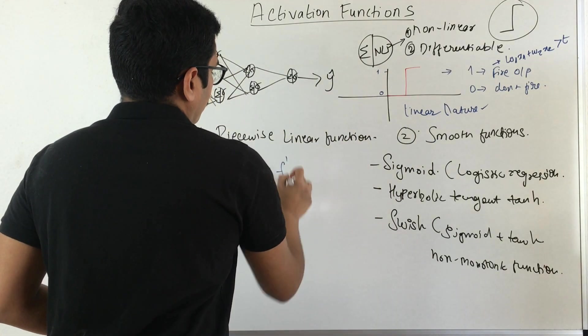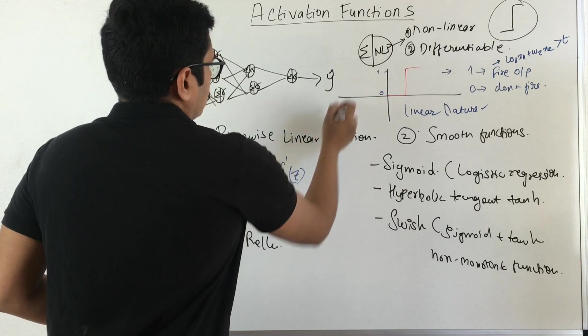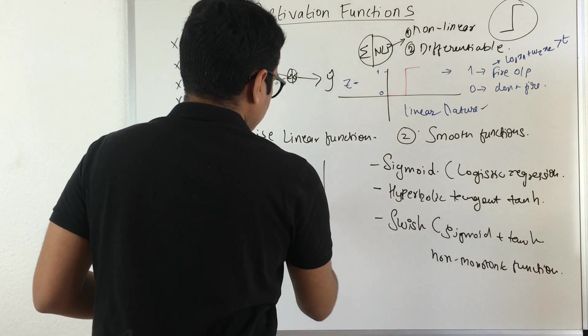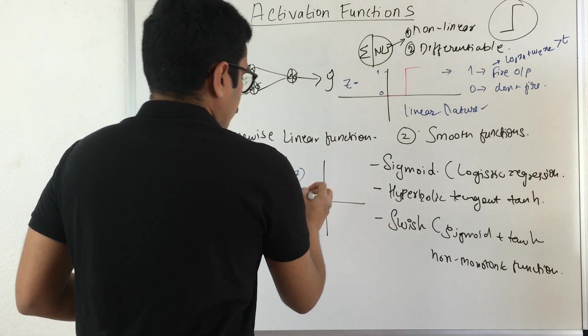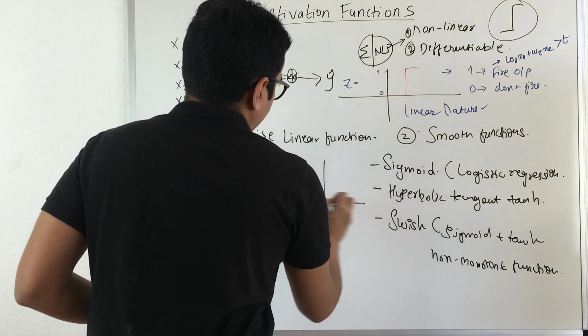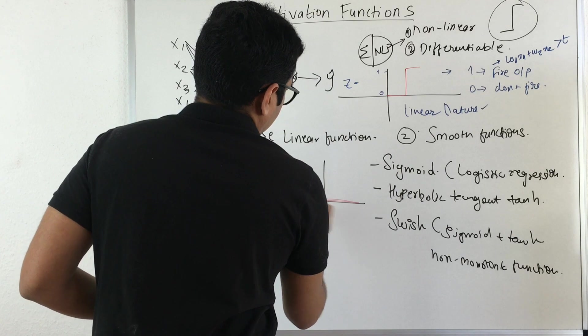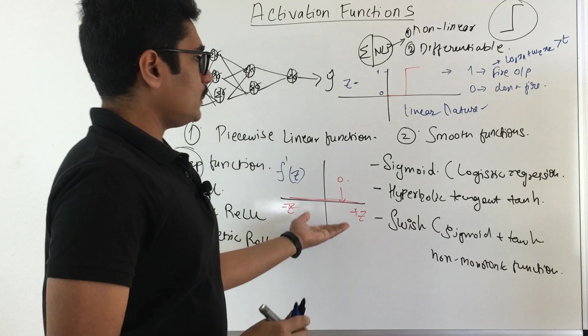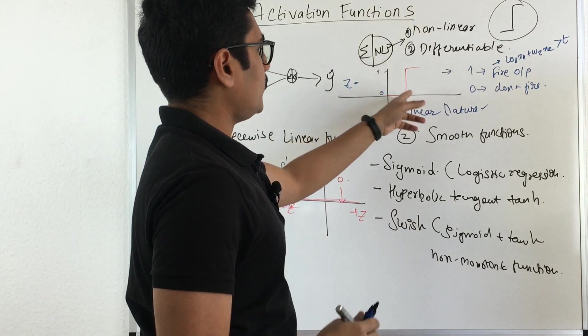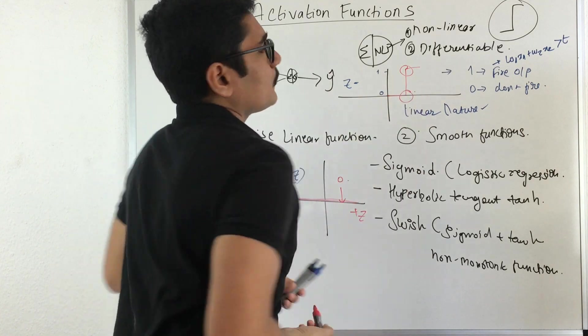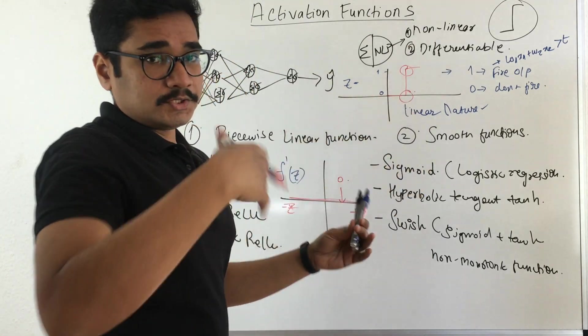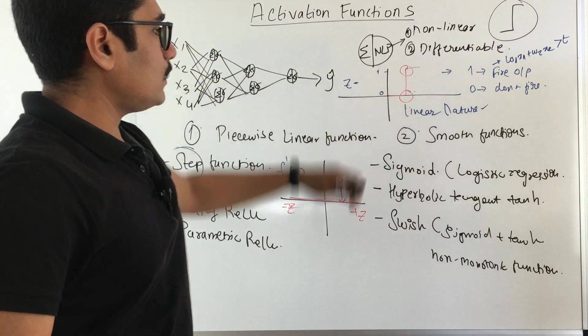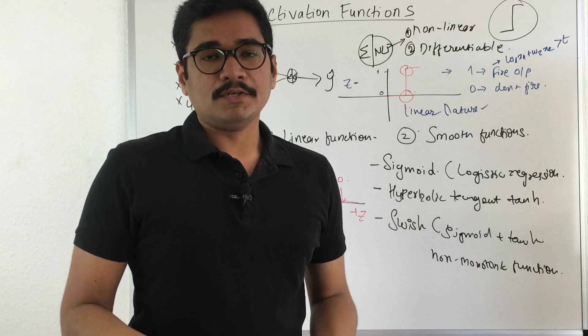Say we are computing F prime of Z, where Z is some computations. If you just visualize this, the derivative or the very first primary derivative would be lying somewhere here. Say this is minus Z and this is plus Z. The derivative is 0 at this particular point. So you have some breaks at these two points. It is not smooth. There is a sudden shift from positive 1 to 0 that is happening.